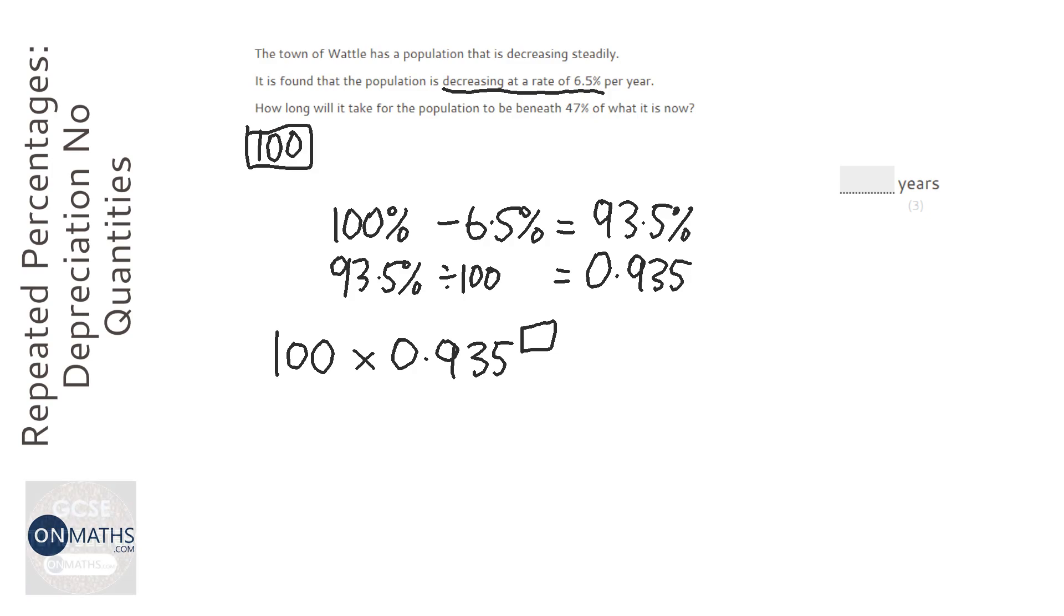To get the answer that is less than 47% of it. Well, the reason I pick 100 as my quantity I've made up is because 100 is nice and easy, because 47% of 100 is 47. So we need it to be less than 47.